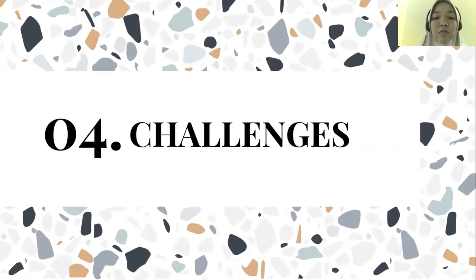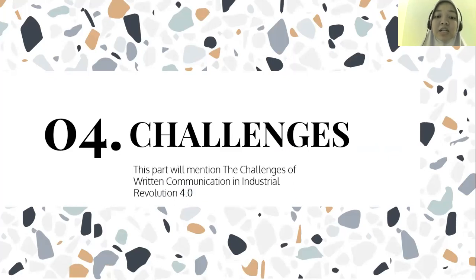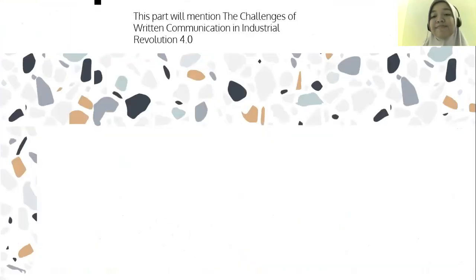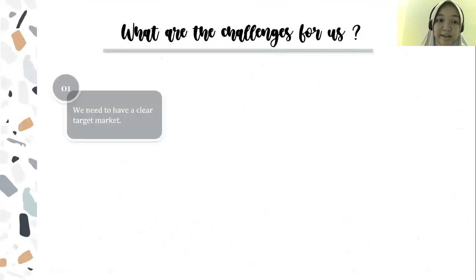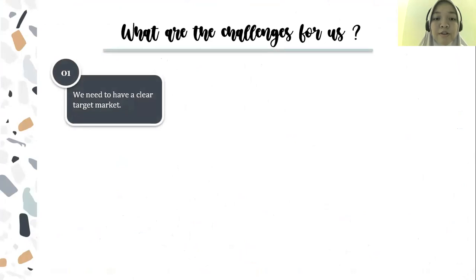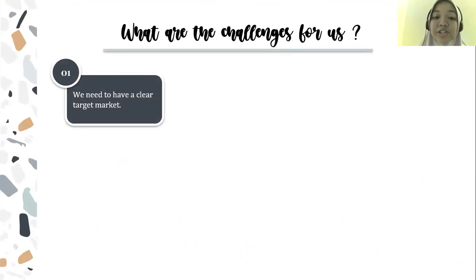Now let's look at the challenges for us in using artificial intelligence as a medium of written communication. First, not all people of all ages are able to use and access information from artificial intelligence in everyday life, such as the use of gadgets. Therefore, we need to have a clear target market.